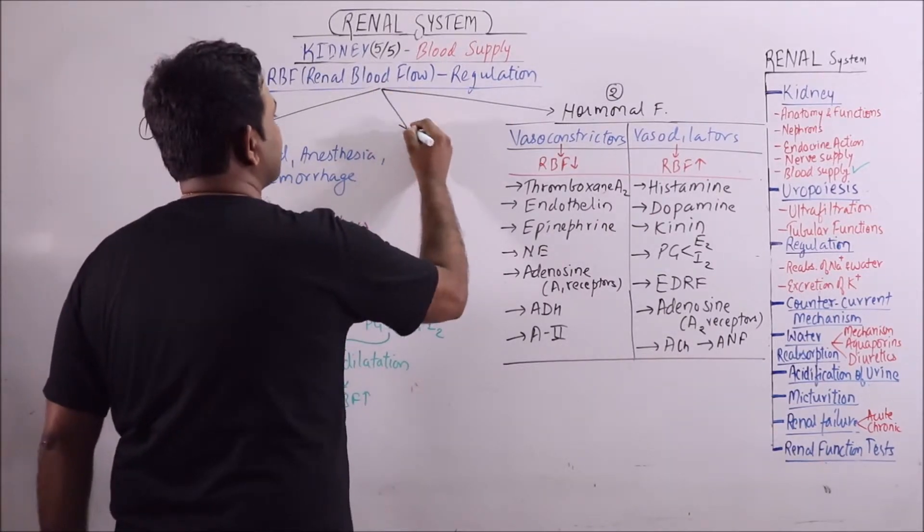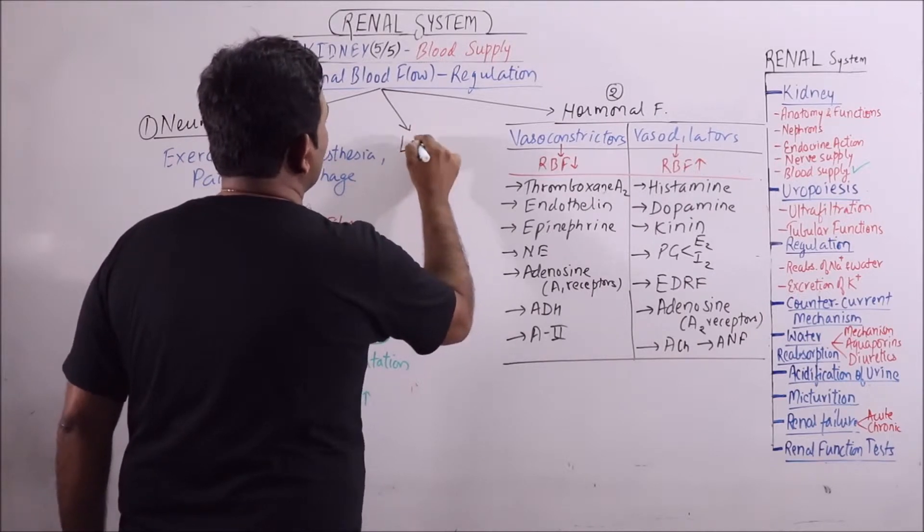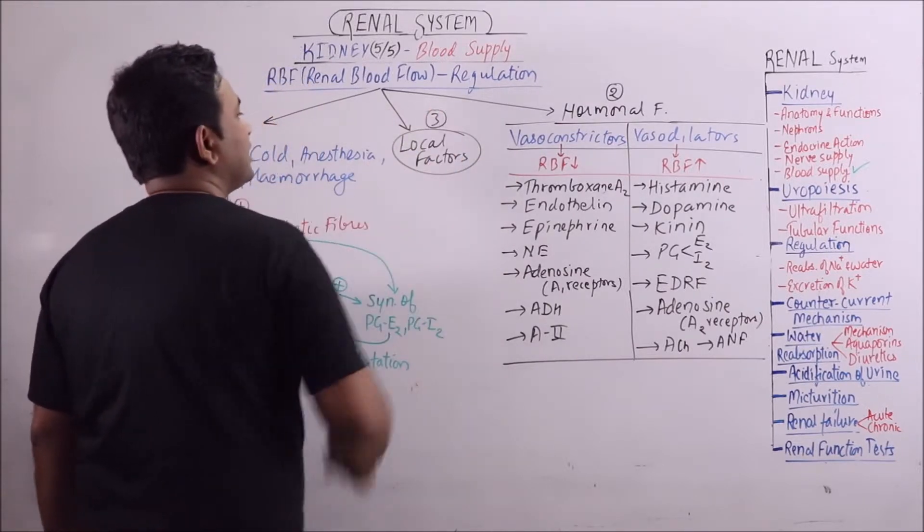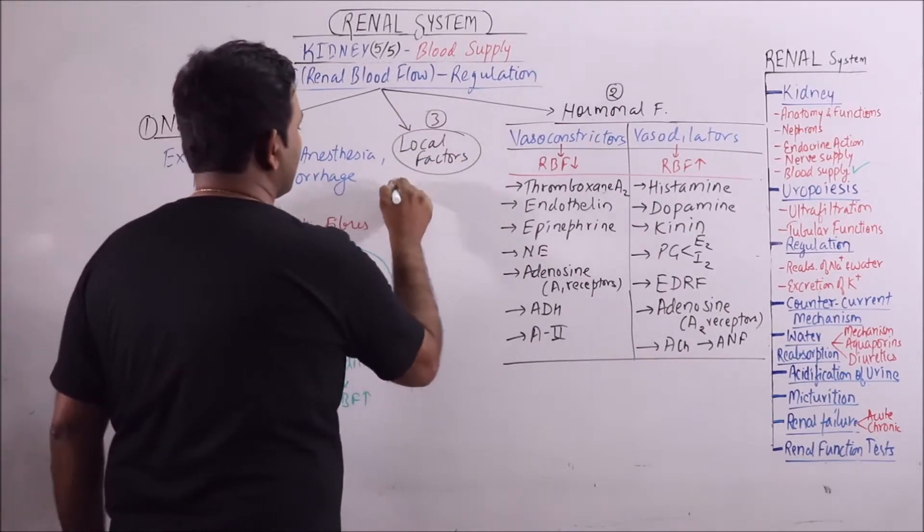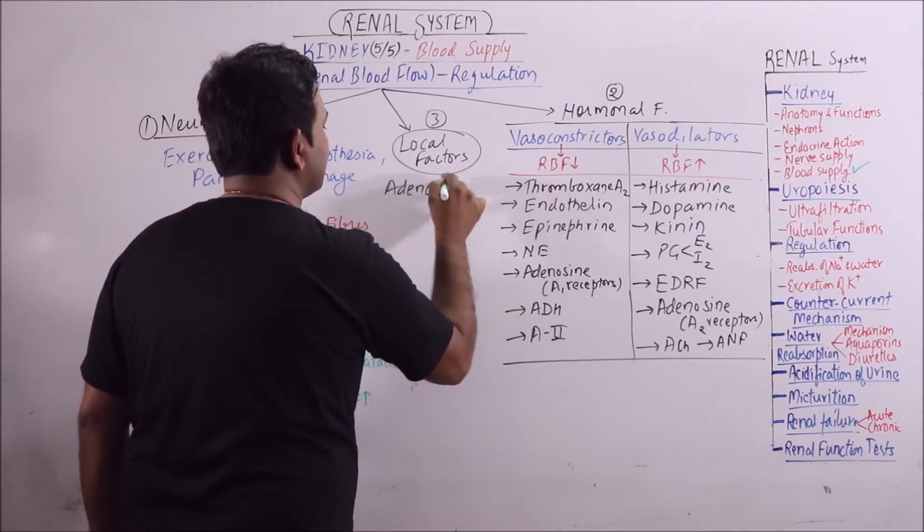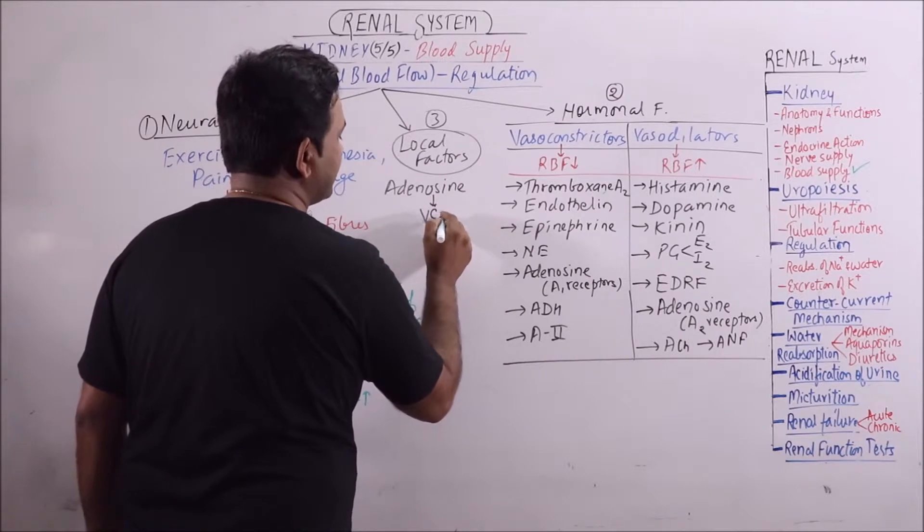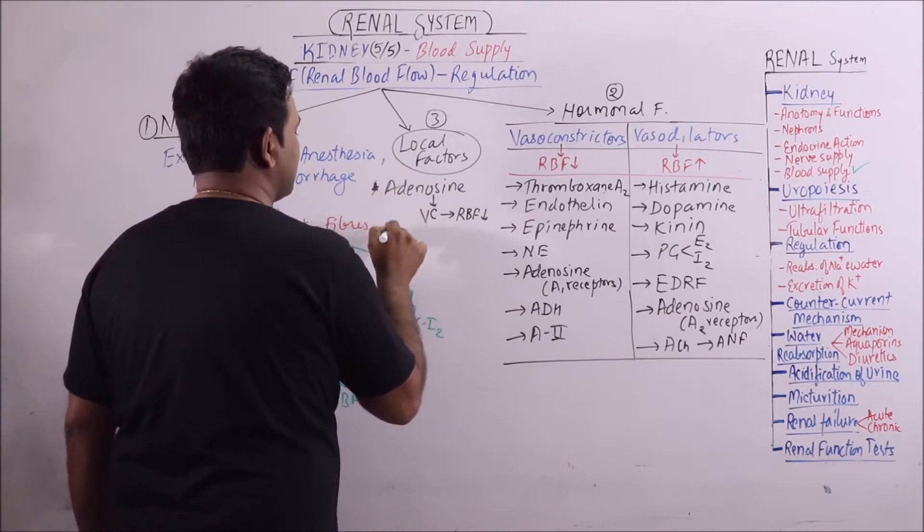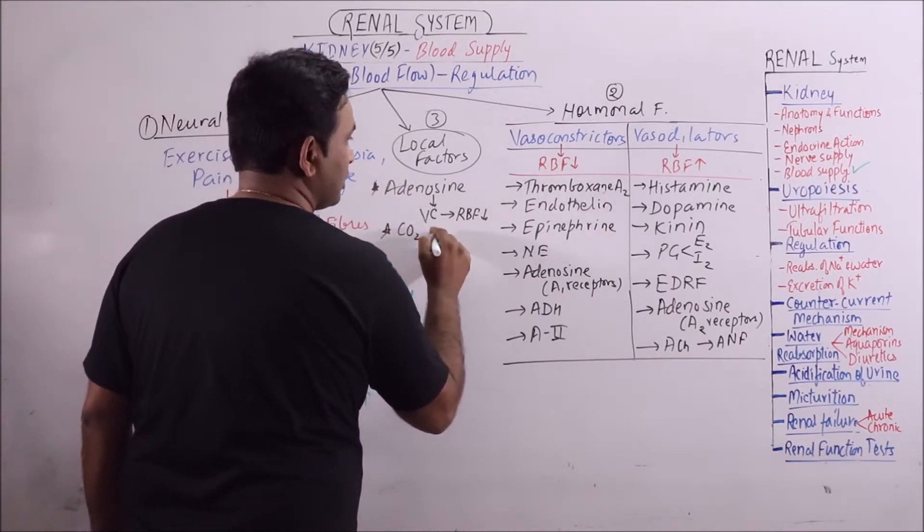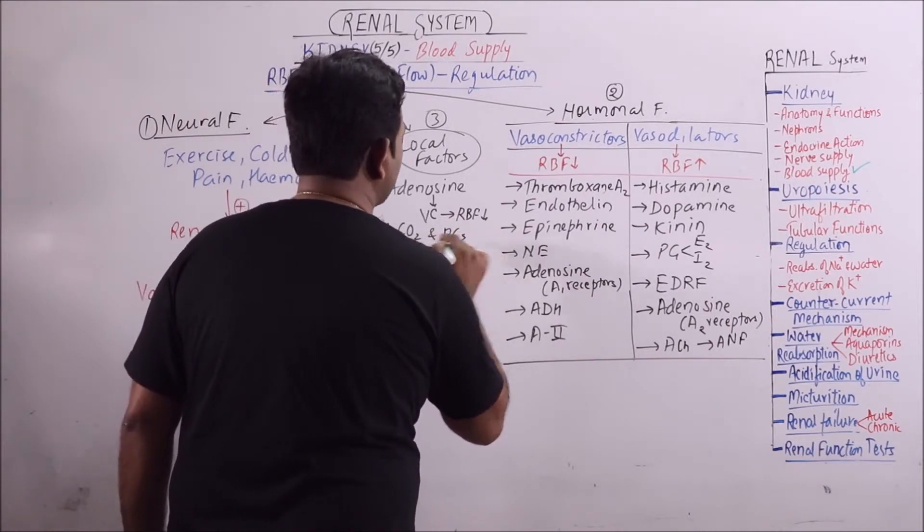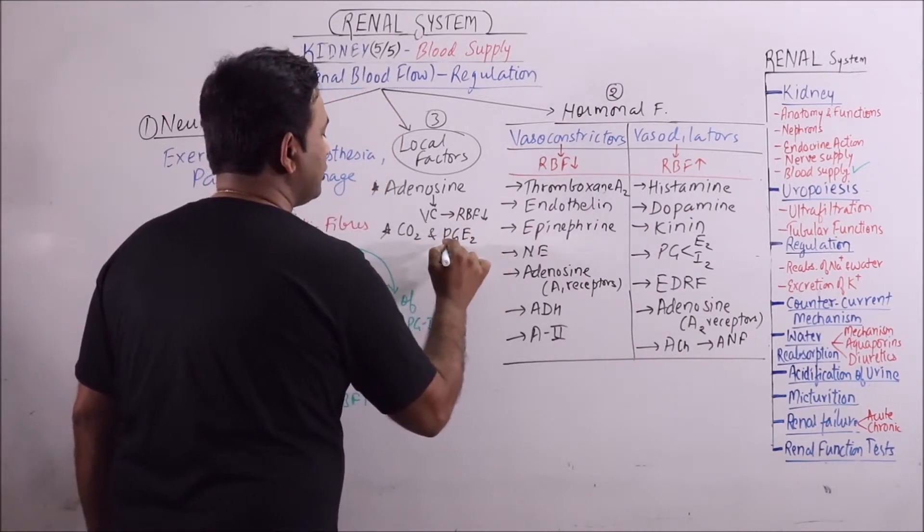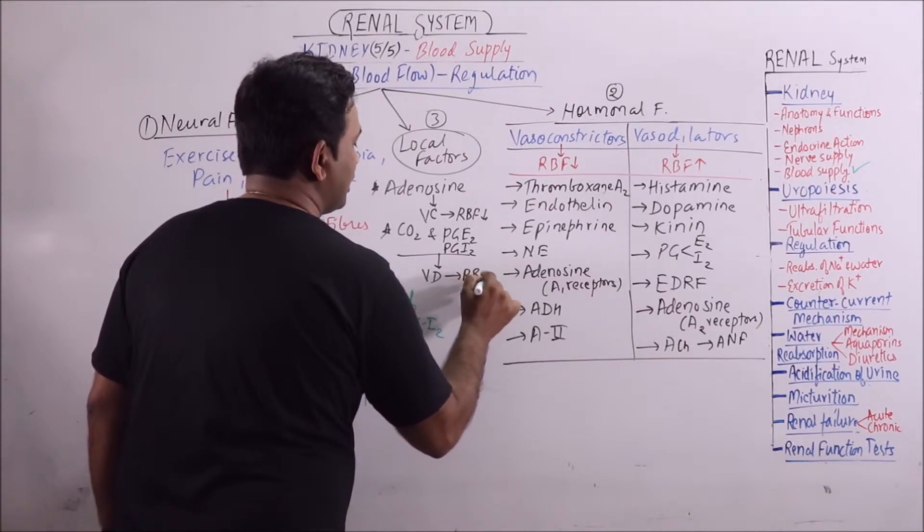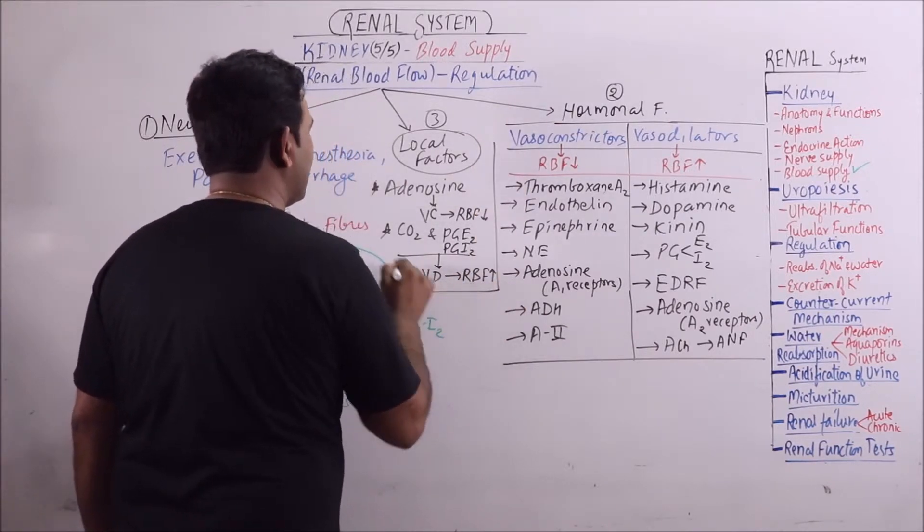The third factor is local factors which are produced as metabolites. For example, adenosine. It is a vasoconstrictor and will result in decrease in RBF. Then CO2 and prostaglandins, like PGE2 and PGI2. These will cause vasodilation and will result in increase in RBF.